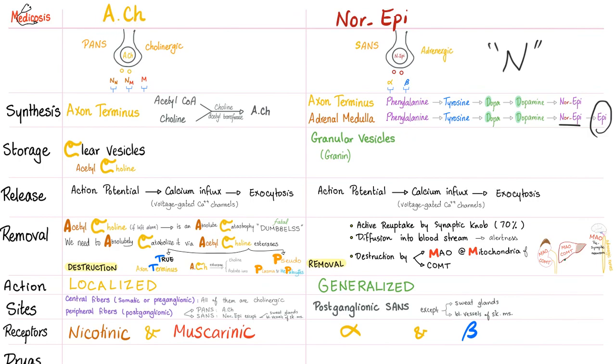Storage: acetylcholine is stored in clear vesicles, norepinephrine in granular vesicles with granin. Release of acetylcholine requires action potential, calcium influx, and exocytosis. Same thing with norepinephrine.